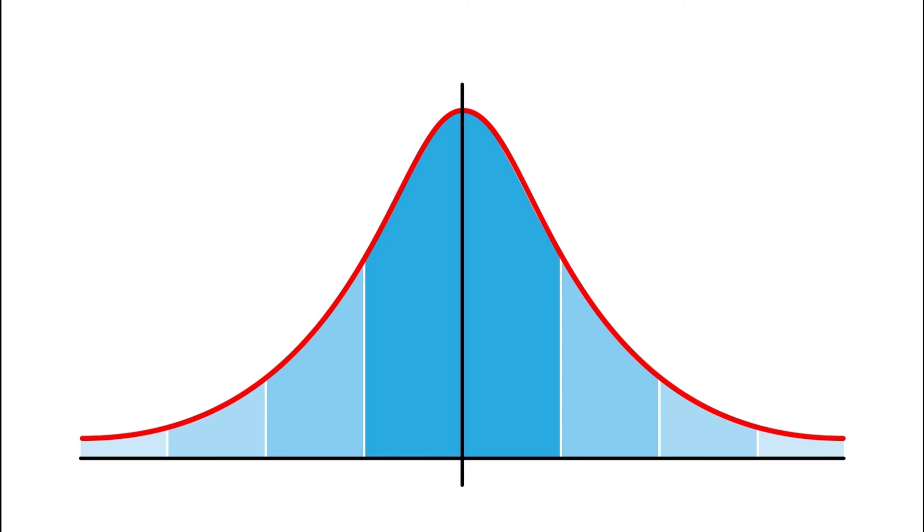Where you're probably most used to seeing the bell curve is in test scores. Now the complete area under the curve is 100% and the bulk of test scores, say on the SAT or the GRE, the bulk fall into the middle here. You can equate this to getting a grade of C on a test.